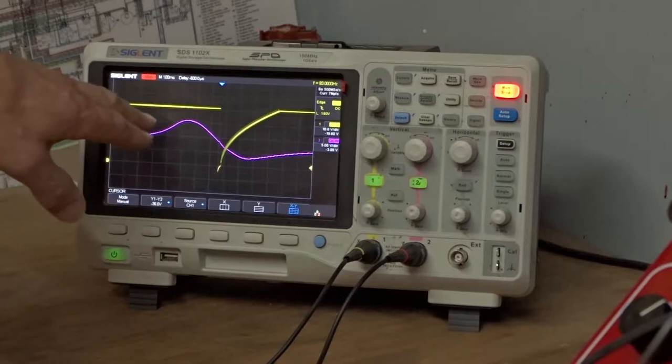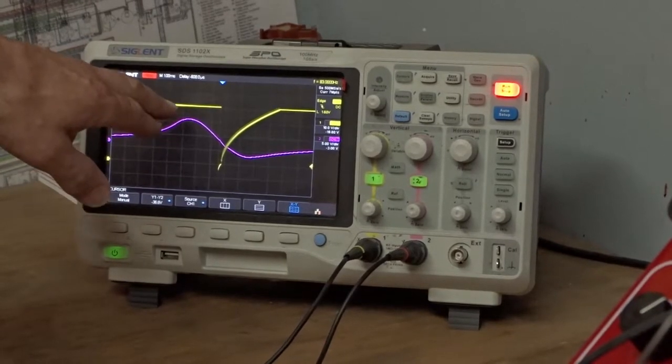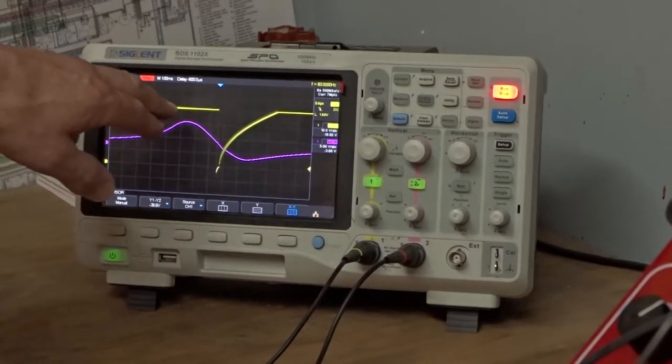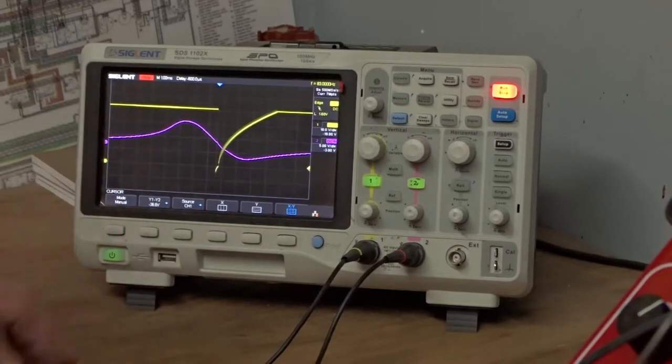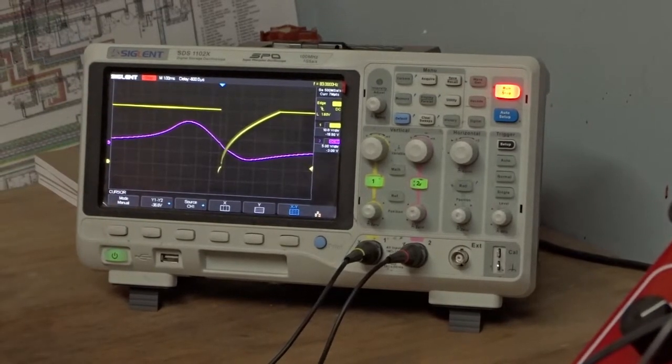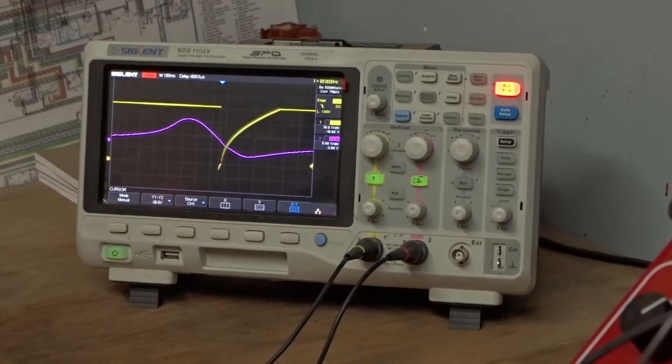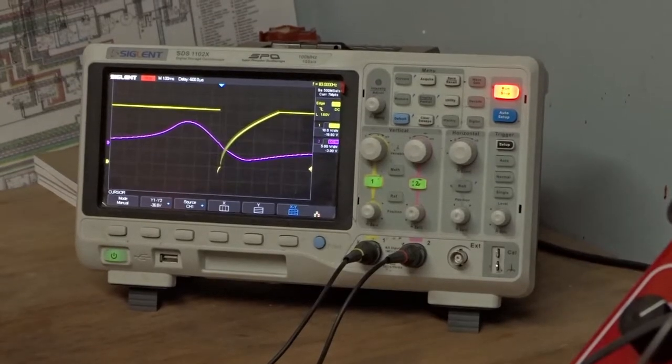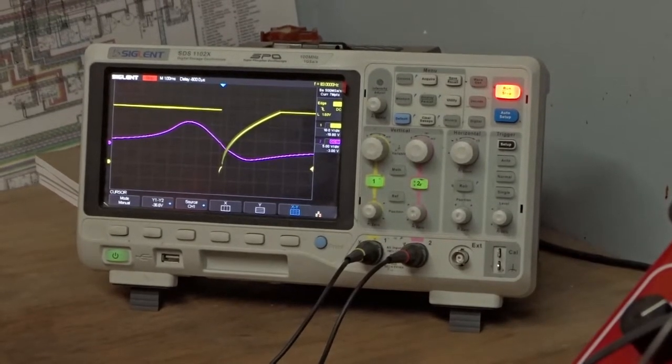This upward slope is also very important. The CDI is looking for this positive going waveform to know to arm itself to get ready to fire. So when it sees the negative going slope, it knows to discharge.